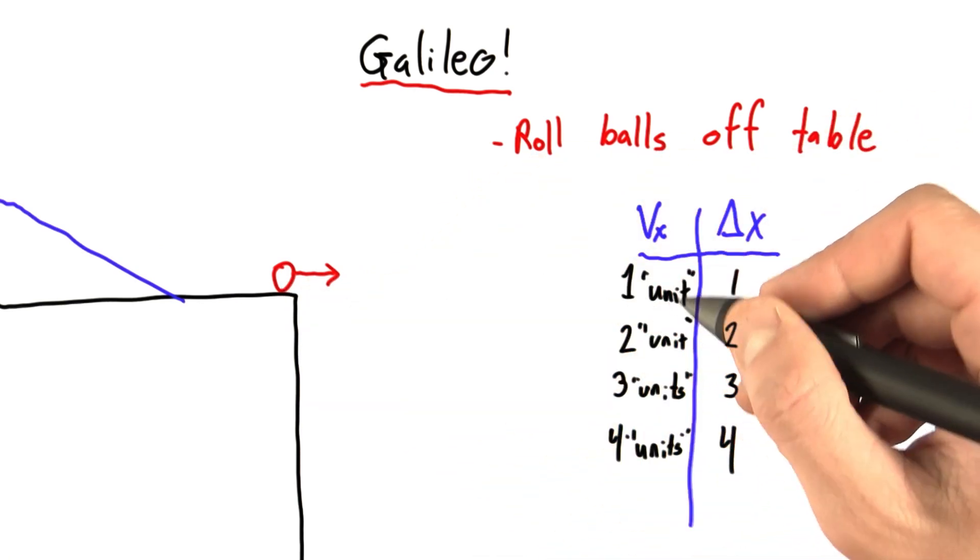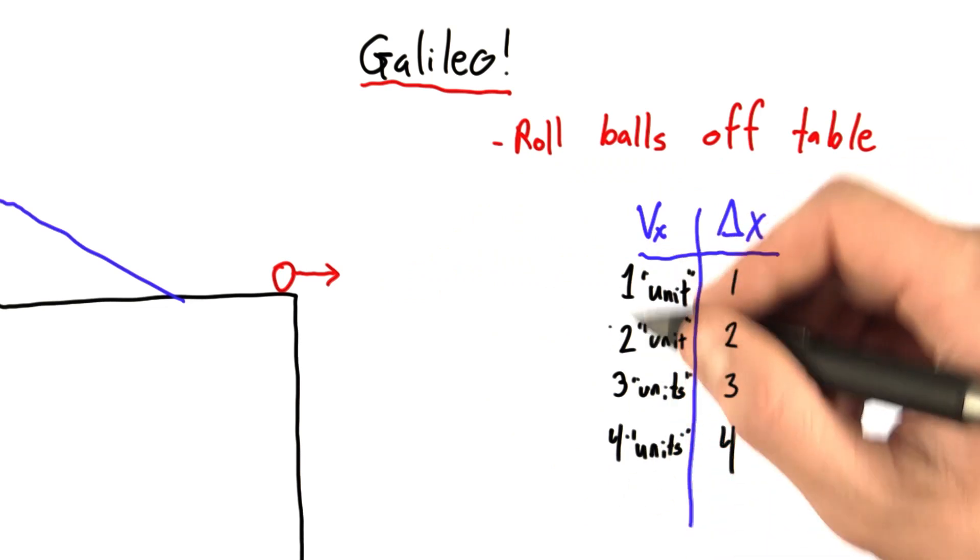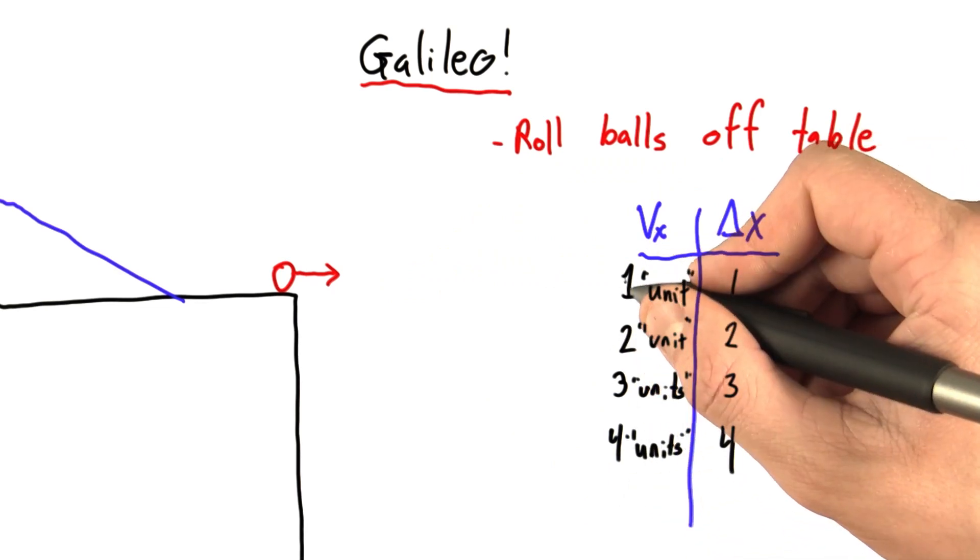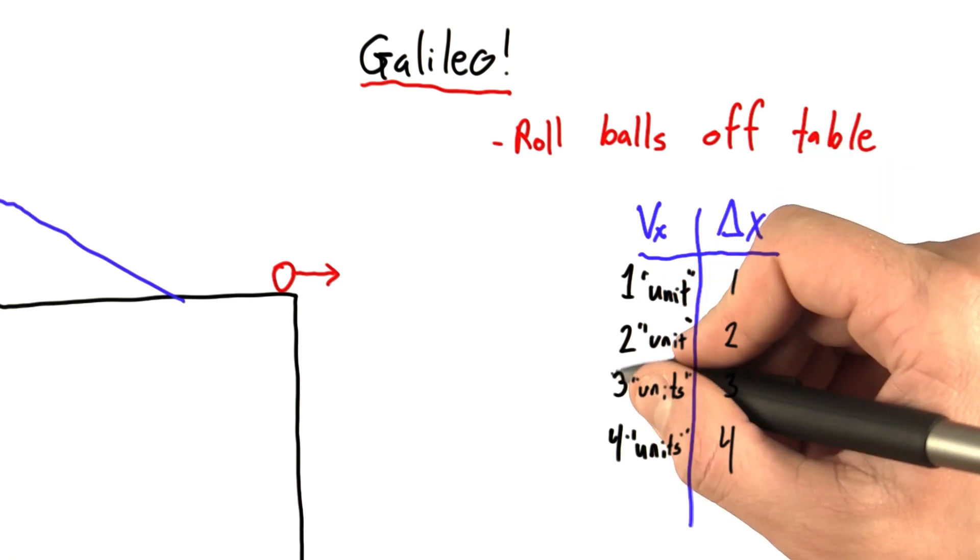Like in his previous experiments, he didn't know the units of his velocity, but he knew their relative sizes. So for example, he knew he could make the velocity twice as big as it was originally, or three or four times bigger.